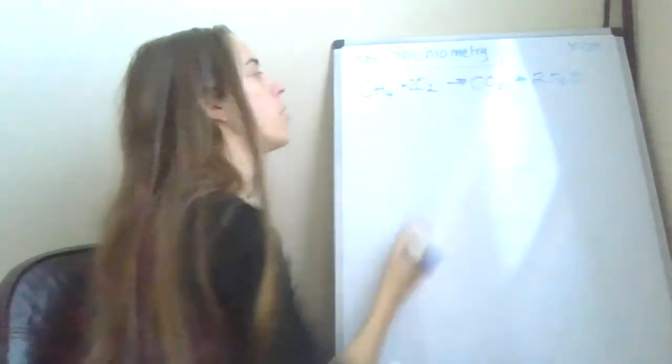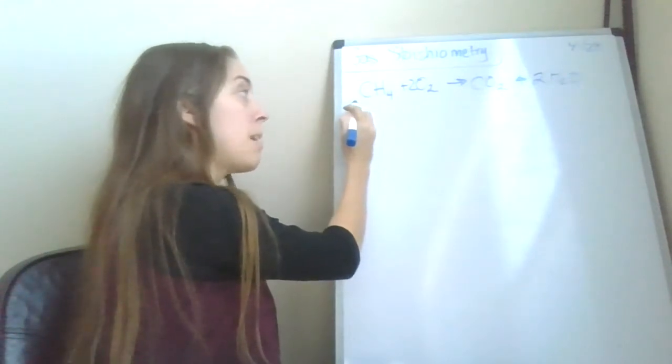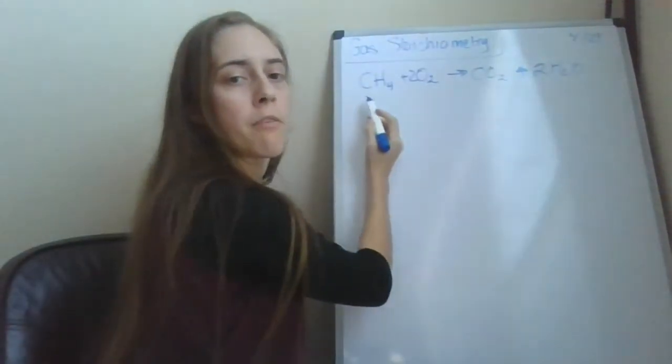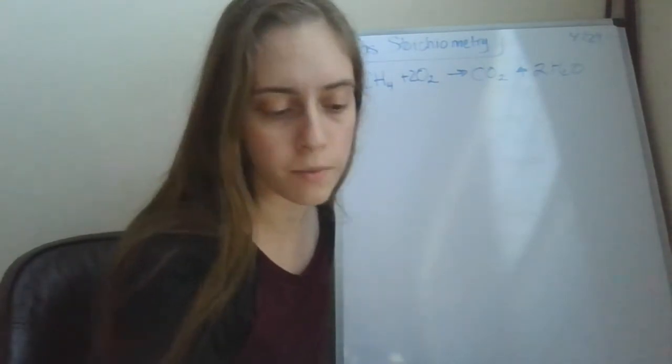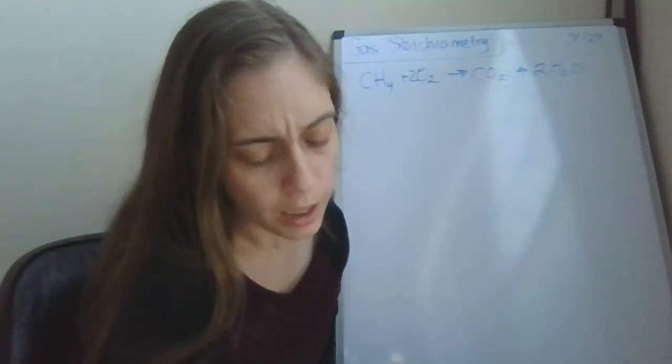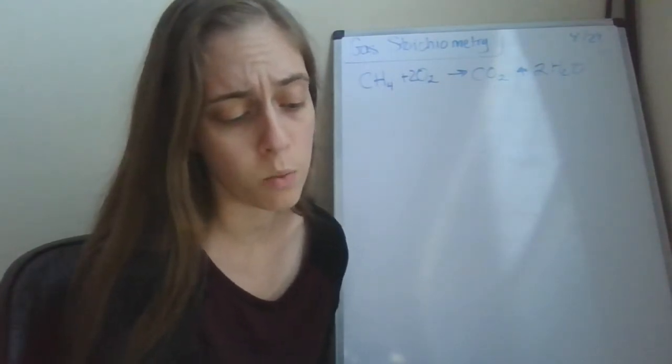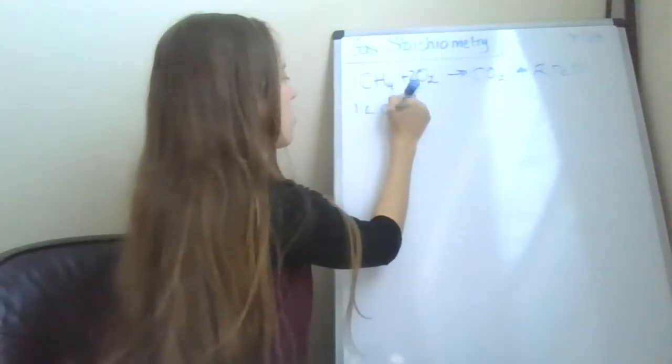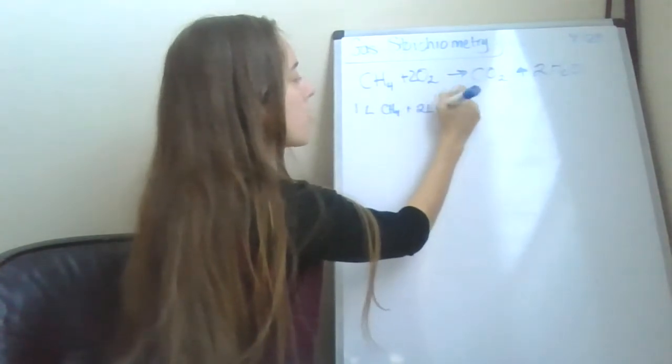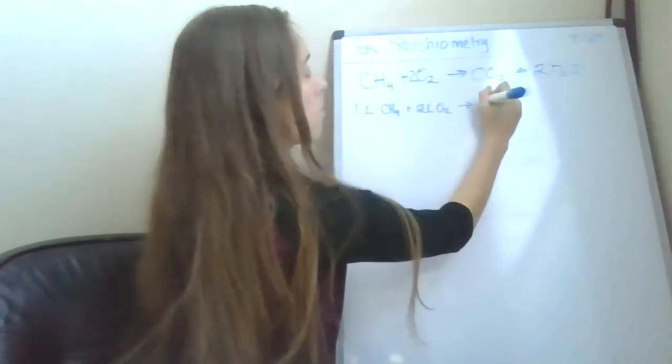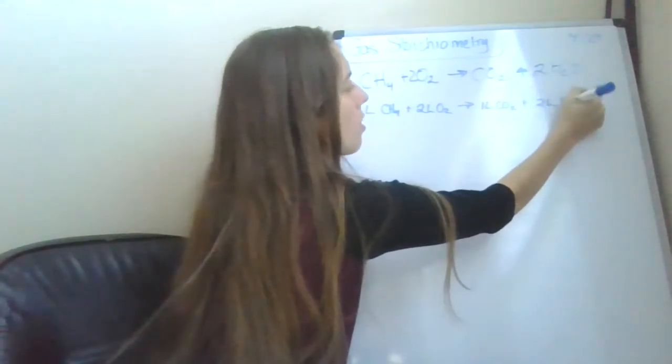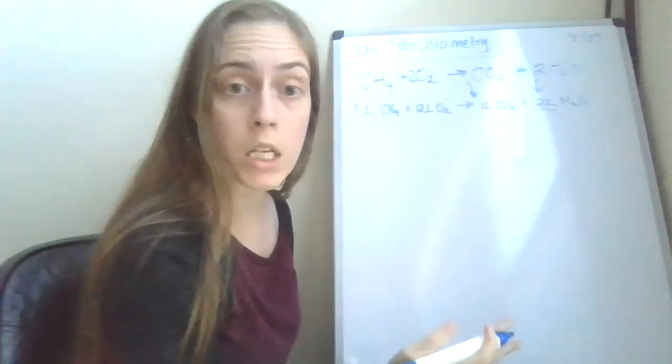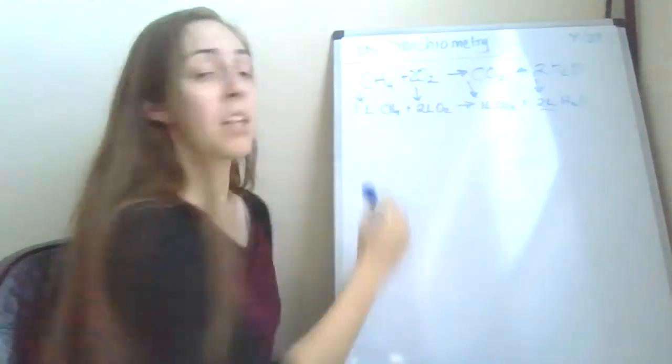So your coefficients are 2 and 2. For every 1 mole of methane, we need 2 moles of oxygen. But now we can also apply this to liters. For every 1 liter of methane, we need 2 liters of oxygen. The complete combustion of 1 liter of methane will produce 1 liter of carbon dioxide and 2 liters of water vapor. It's those same coefficients.